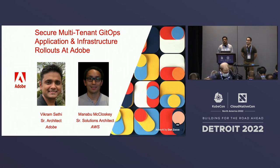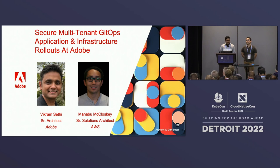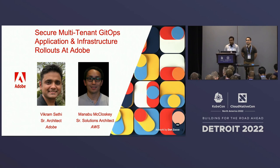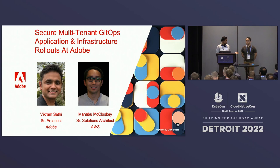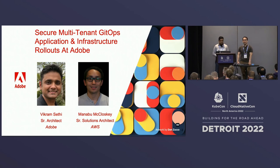My name is Vikram, and I'm a senior architect at Adobe. I work in the developer platforms organization. These days I'm working on introducing advanced capabilities into our internal developer platform, including GitOps-based CI/CD, GitOps-based infrastructure provisioning, and building an AIOps foundation. With me I have Manabu from AWS. My name is Manabu Makulowski. I'm a solutions architect for AWS, and I focus on open source technologies, especially around infrastructure tooling.